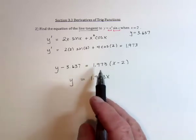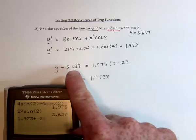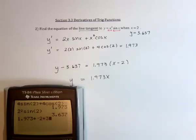And then for the last part, we would have 1.973 multiplied with a negative 2. And then this, we would need to add to both sides. So add 3.637.